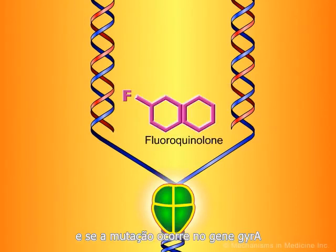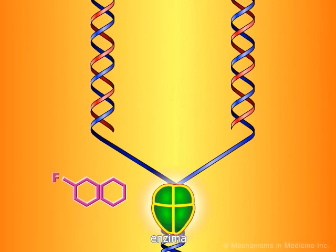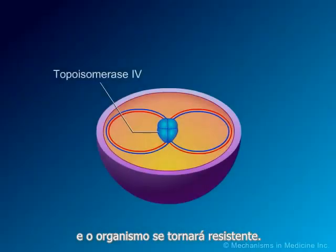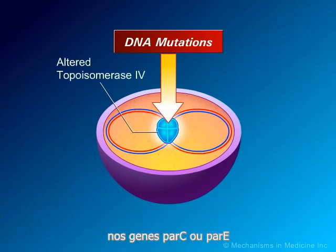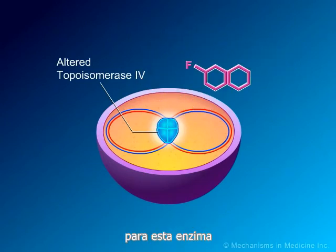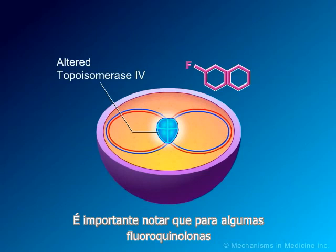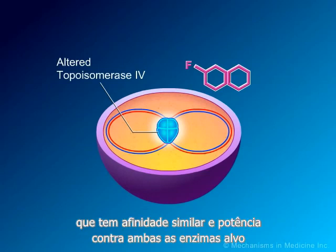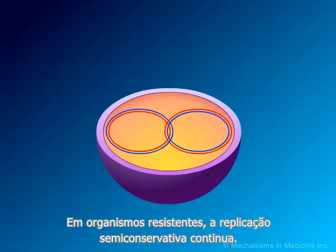If a mutation occurs either in the GYRA or GYRB gene that alters DNA gyrase and results in a reduced affinity of the fluoroquinolone antibiotic for this enzyme, the organism will become resistant. Similarly, a mutation may occur that alters topoisomerase 4, either in the PARC or PARE gene, and results in a reduced affinity of the fluoroquinolone antibiotic for this enzyme, and the bacterial organism will become resistant. It is important to note that for some fluoroquinolones that have similar affinity and potency against both target enzymes, mutations in both DNA gyrase and topoisomerase 4 will be needed for resistance to occur.